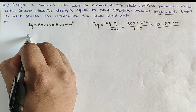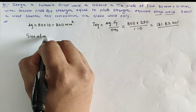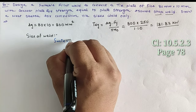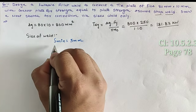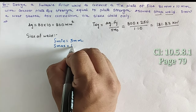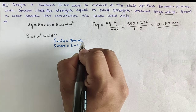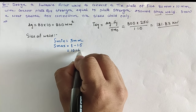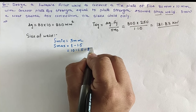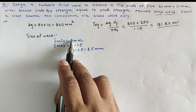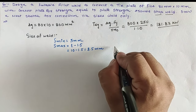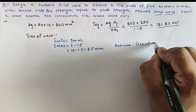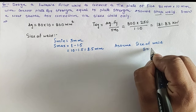For the fillet weld, we require the size of the weld. The minimum size of weld according to the codal provision is 3mm, while the maximum size of weld can be taken as t minus 1.5, where t is equal to the thickness of the given plate, which is 10 minus 1.5 equals 8.5mm. So we can choose the size of weld between 3 to 8.5mm. Let us assume size of weld s equals 6mm.